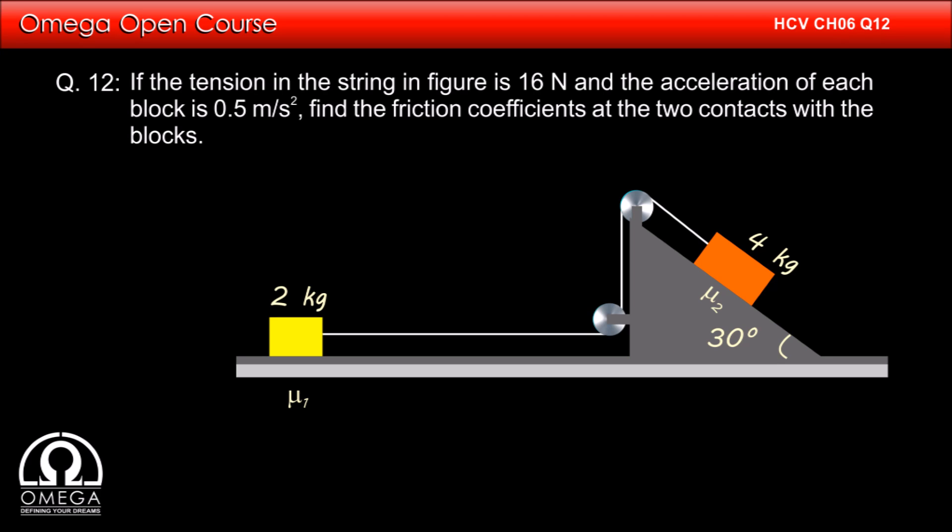If the tension in the string in the figure is 16 Newton and the acceleration of each block is 0.5 meter per second square, find the friction coefficient at the two contacts with the blocks.